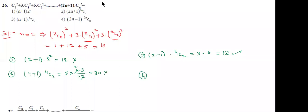Now verify the fourth option also. We get (2n-1) into 2nC: 2n means 4, 4 minus 1 is 3, and 4C2 means 6. This is also 18. So if n = 2, these two options coincide.